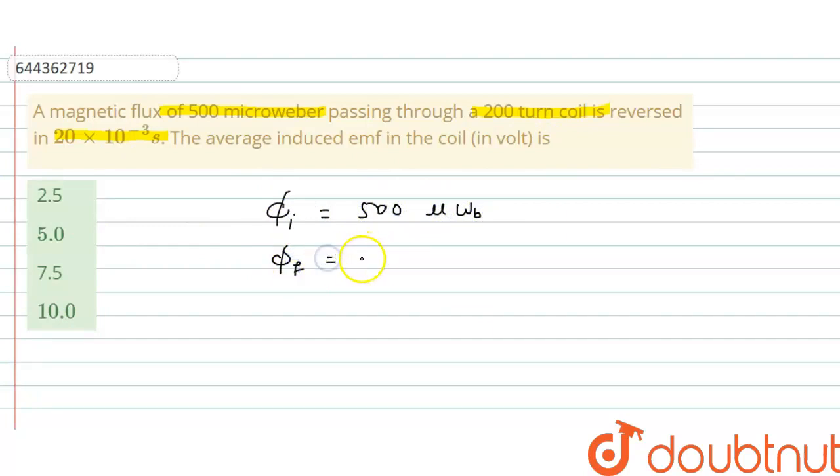So this change in magnetic flux will be equal to minus 500 microweber because it reverses its direction in this second.